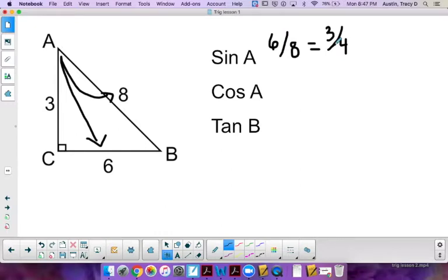Okay, so if I want the cosine of A, cosine again being adjacent, that's the side next to the angle over the same hypotenuse of that whole triangle. That's going to be three over eight, and that does not simplify any further.